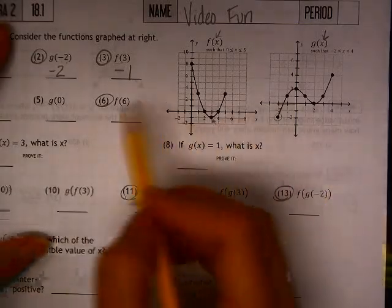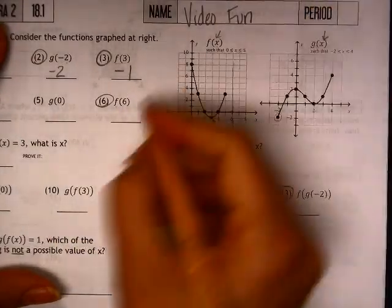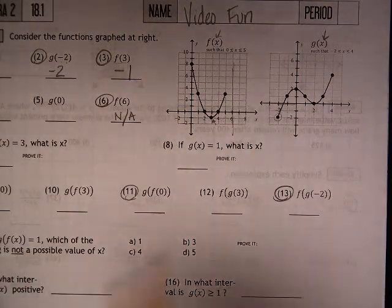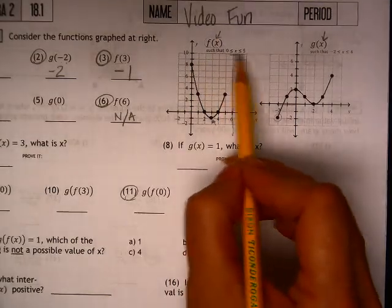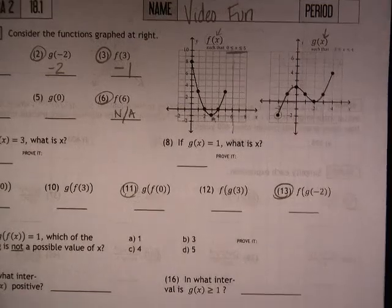Let's try one other one: f of 6. f of 6 doesn't exist—it's just not there. That's because this function is only from 0 to 5, and 6 is out of that range.